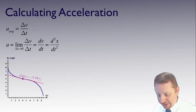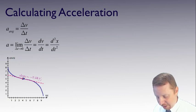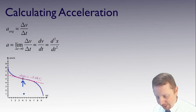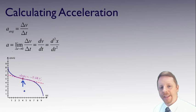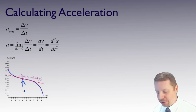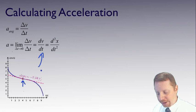So if we had a velocity-time graph and wanted to know the exact acceleration at a given point in time, we would draw a line tangent to the curve at that point, take the slope of that line, and that gives the instantaneous acceleration — which is the first derivative of velocity.